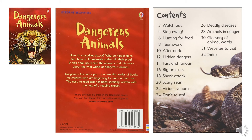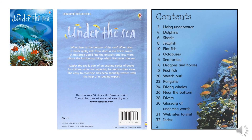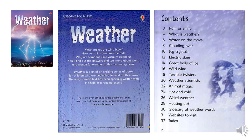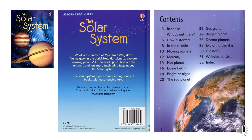Here I've given you the front and the back and the contents pages of each of these books, just in case you're struggling to know where to begin. You might want to spend a bit of time reading the blurb on the back of each book and have a look at the contents page — it might give you some guidance of where to start doing your own research. Here is the back cover of Dangerous Animals and the contents page, Under the Sea, the book about weather, and finally the solar system. Hopefully that will give you a bit of help to know where to start completing your research.